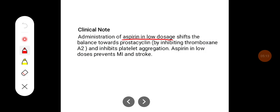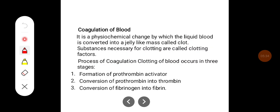Administration of aspirin in low doses shifts the balance towards prostacyclin by inhibiting thromboxane A2, thereby inhibiting platelet aggregation. Thus, aspirin in low doses prevents myocardial infarction and stroke, which are vascular accidents.